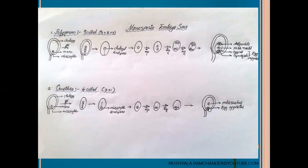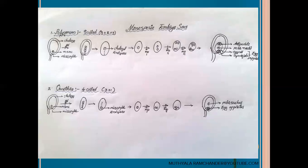The middle cell acts as the egg cell and the lateral two cells act as synergids. At the mature stage of the enothera embryosac, only four cells are present, arranged in a three plus one arrangement. Three cells belong to the egg apparatus, and one cell is the polar nucleus or secondary nucleus. In enothera, the secondary nucleus is in haploid condition and antipodals are absent.